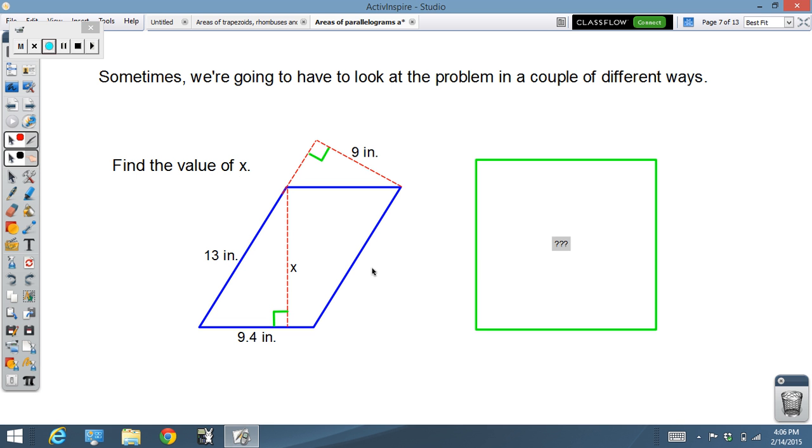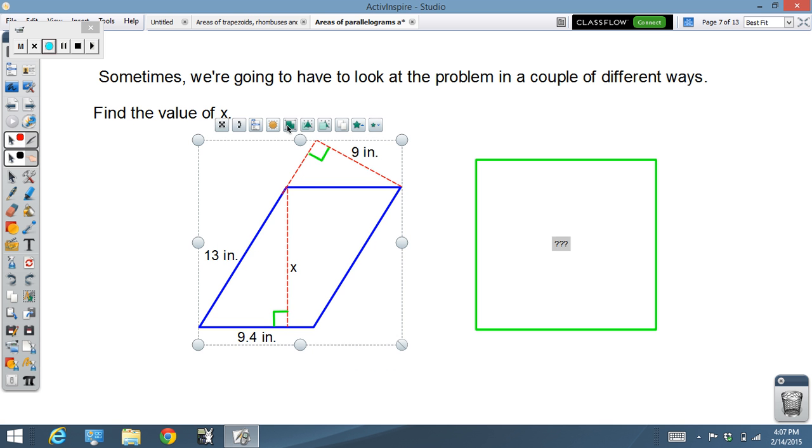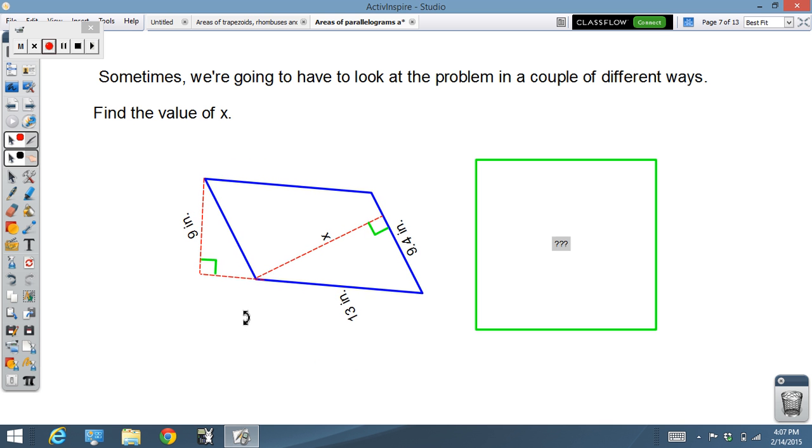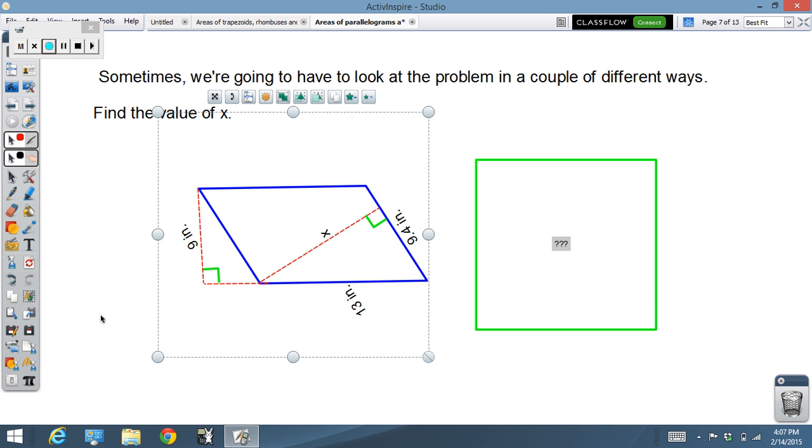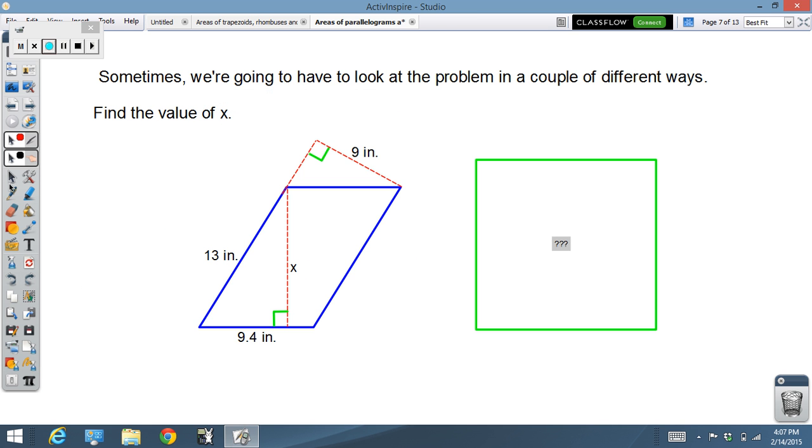Book loves this kind of problem. Find the value of x. We know x times nine point four would give us the area, because there's a base and x is the height, the altitude that corresponds to that base. However, we can't just go ahead and solve for x because we don't know the area. Or do we? We do. Because if we look at this thing sideways, turn it around this way, we see that there's a thirteen inch base with a nine inch height. That will give us the area. And when we have the area, we can go ahead and solve for the length of x.